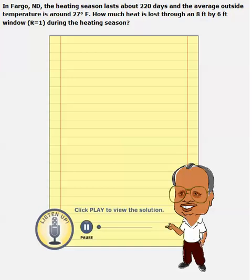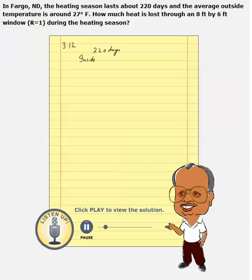This problem is very similar to the last one, 311. This problem 312 involves, again, heat loss through a season. We need to calculate the HDDs. The heating days are 220 days. The temperature difference is inside 65 degrees Fahrenheit, and outside the average temperature is 27 degrees Fahrenheit for all 220 days.